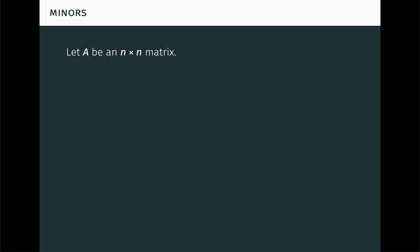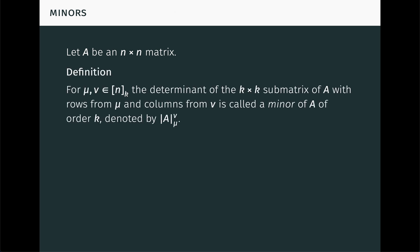Now let A be an n by n matrix. To keep things simple, we assume the entries of A come from a field of characteristic 0, like the real or complex numbers. For sets μ and ν in (n k), the determinant of the k by k submatrix of A with rows indexed by the numbers in μ and columns indexed by the numbers in ν is called a minor of A of order k, denoted with vertical bars like this. I read this as det A_μν. Note that every kth order minor of A is of this form for some μ and ν in (n k). As an example, we compute a second order minor of a 3 by 3 matrix. Be sure to pause the video and make sure you fully understand this example.